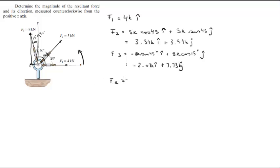The resultant force is calculated by adding all the x components and the y components. So all the x components together should give you 5.47k in the i direction.